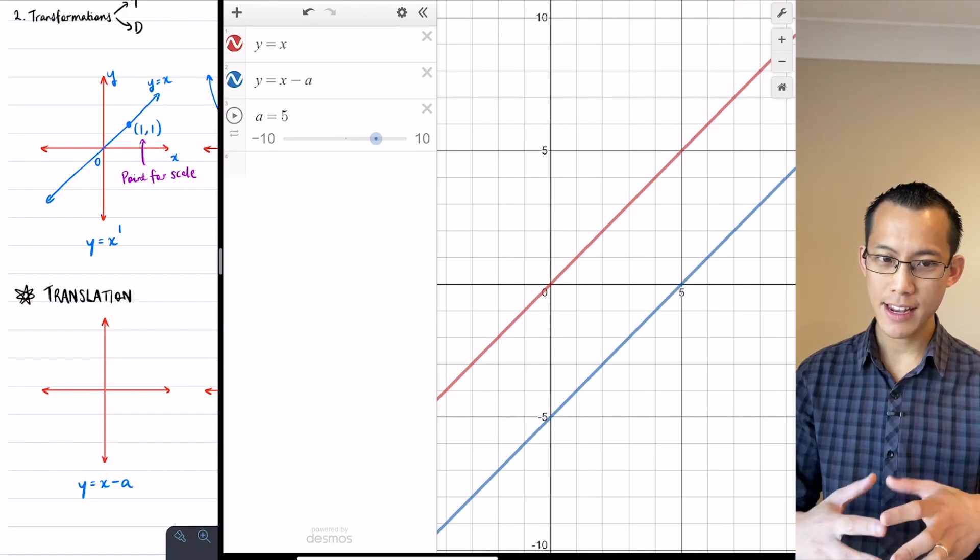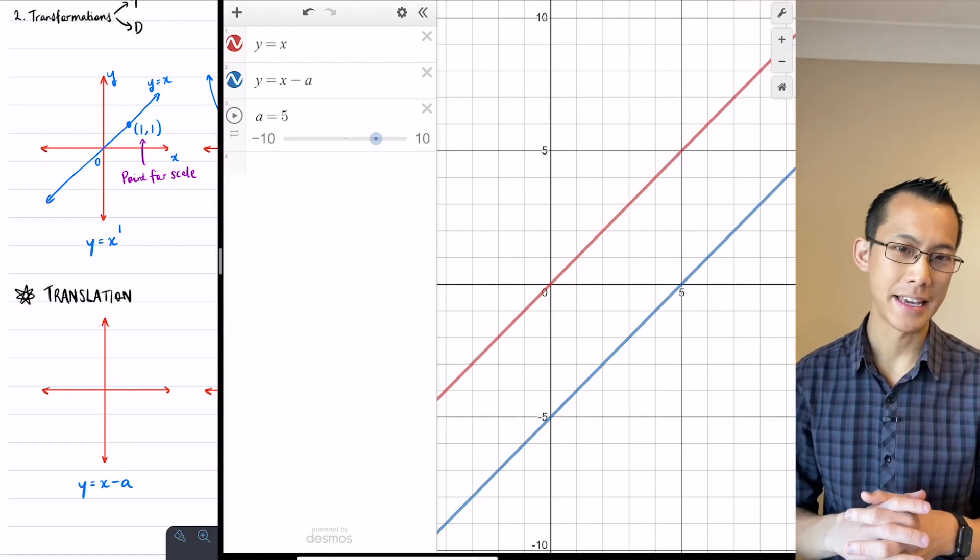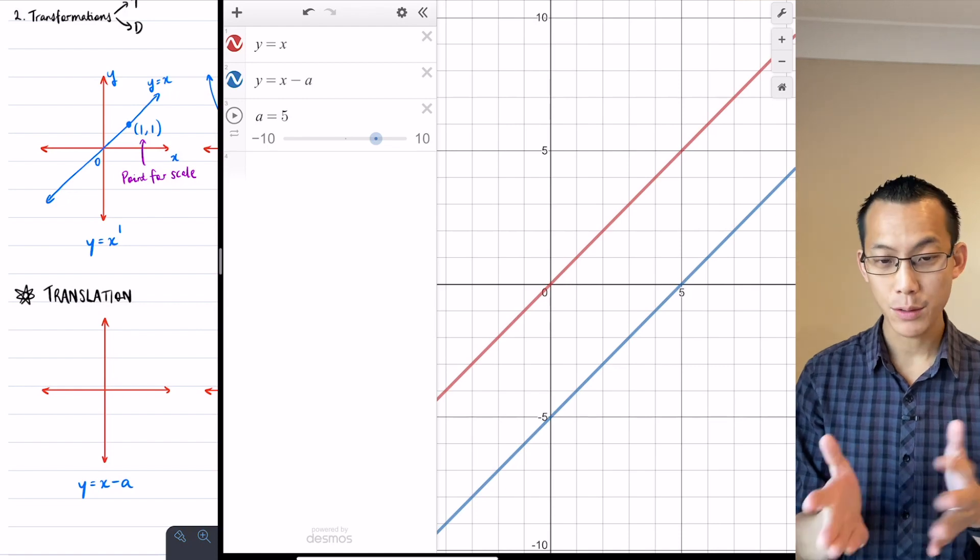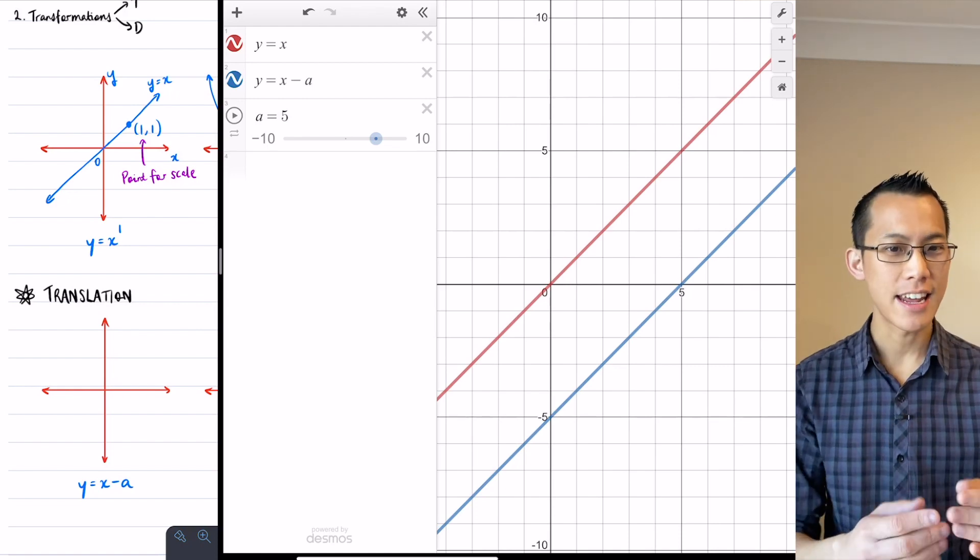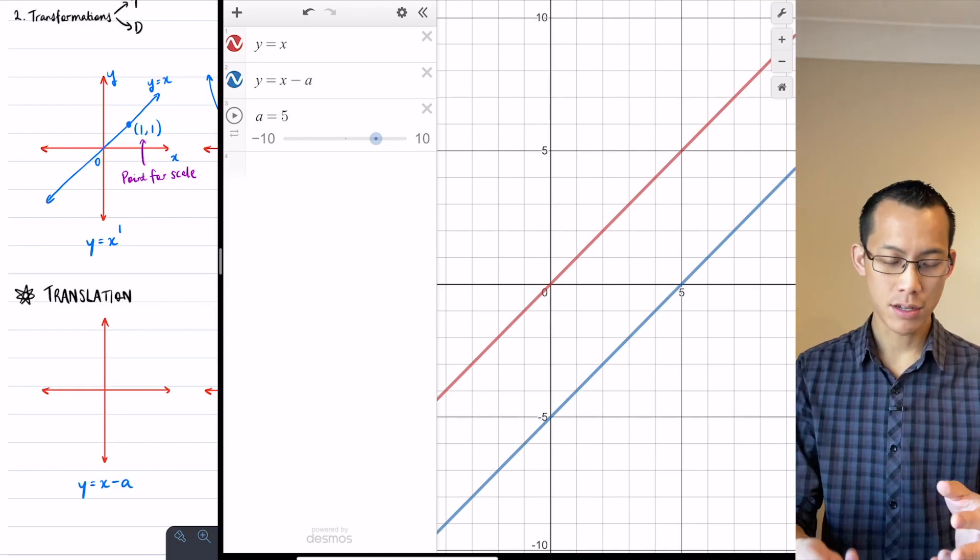So I've shifted over and if you change a further you can see, as I move a further across there's a equals five. I've now slid my blue graph across, I've translated it five units to the right. So when we take in the general case y equals x minus a, what we can say is you've taken your original graph y equals x and you have translated it a units to the right.